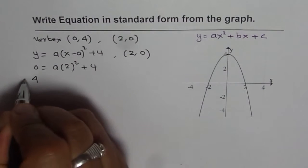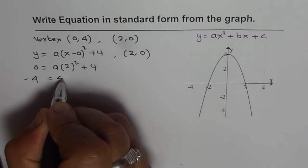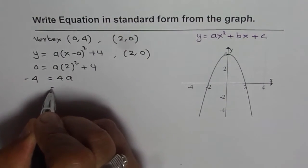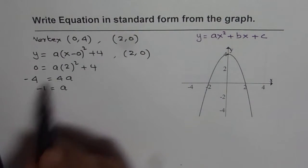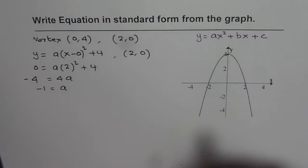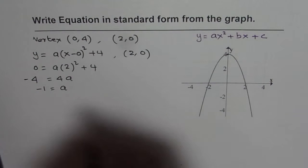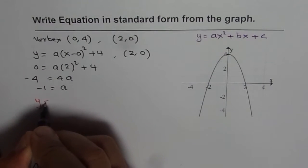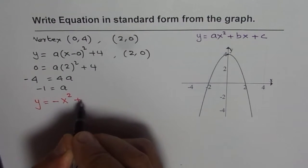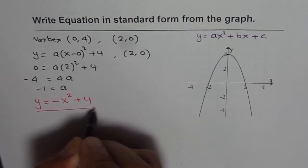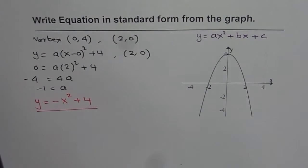Bringing 4 to the left side gives us minus 4 equals 4A, so A equals minus 4 divided by 4, which is minus 1. Substituting back, we get the equation in standard form: Y equals minus X squared plus 4.